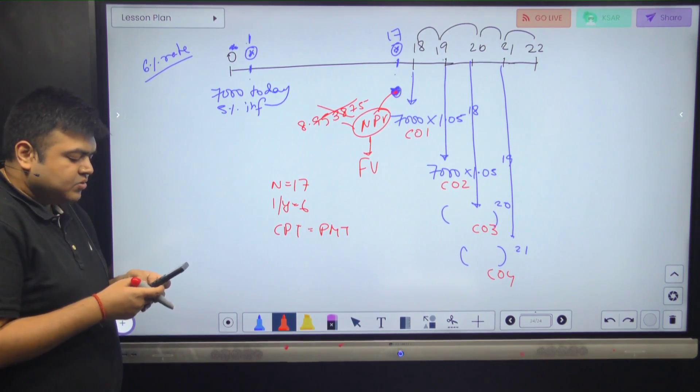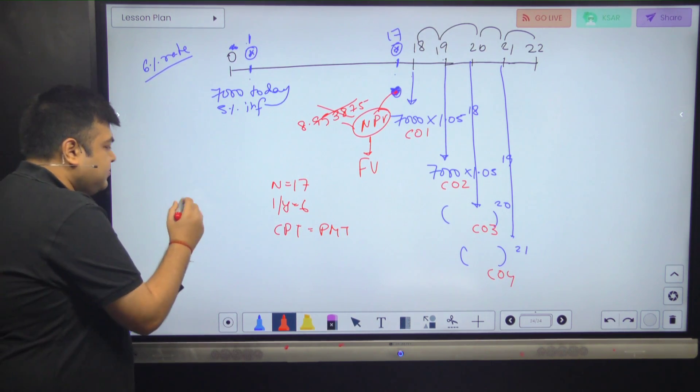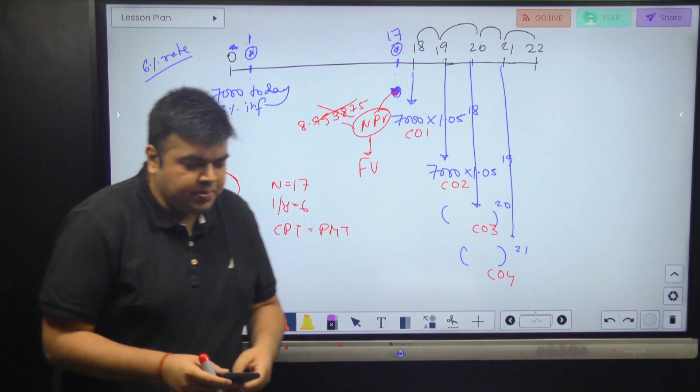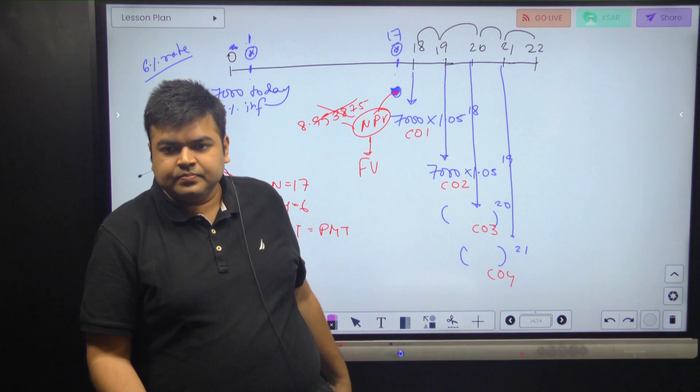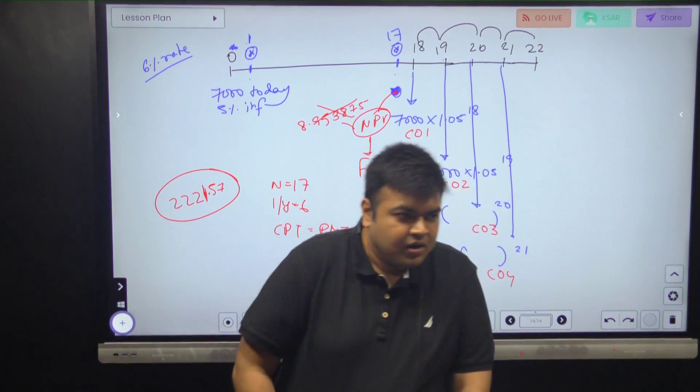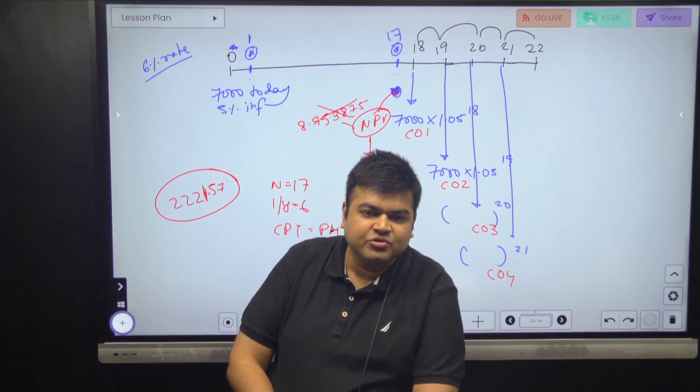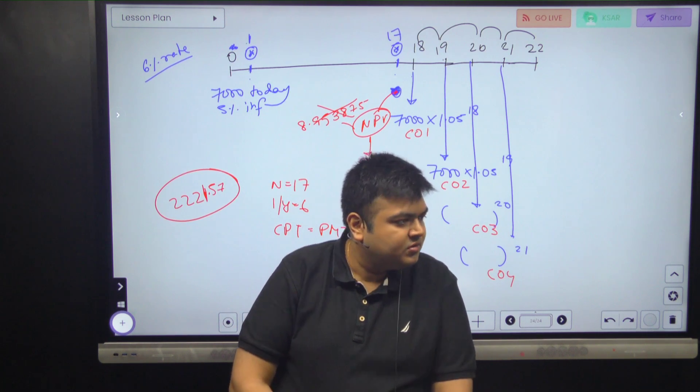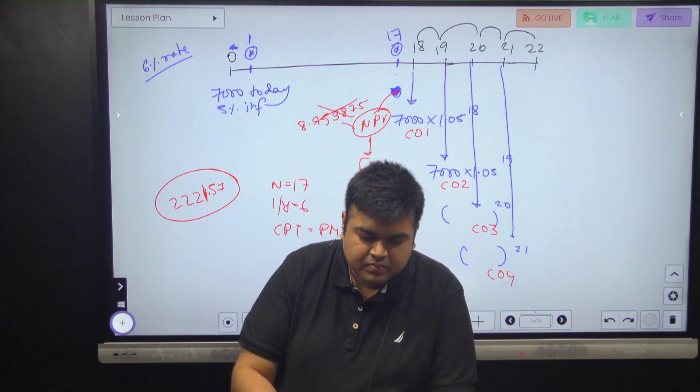And after computing PMT into 7000, my answer is 2201.57. Is that the answer? 2201.57. That's it. Easy. And with this much, I just drew the timeline, but I did not have to write a single number on the paper as such. I was able to do the whole thing on the calculator without any calculation. Got it?